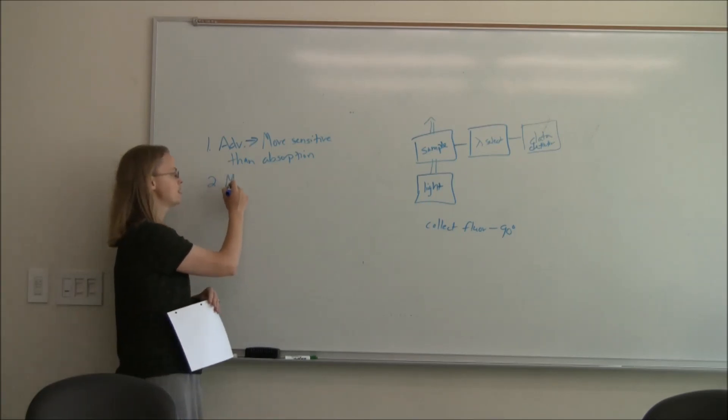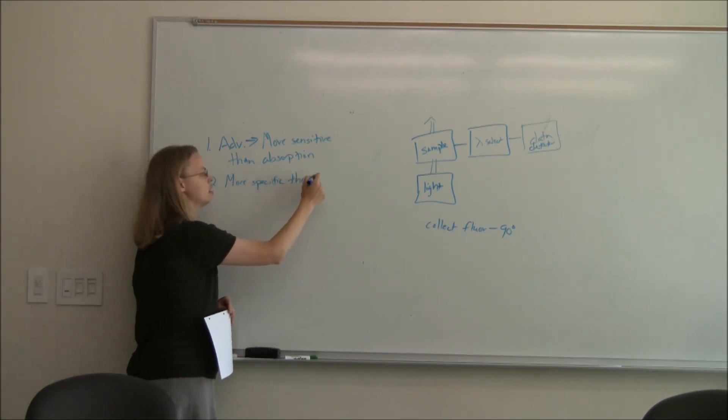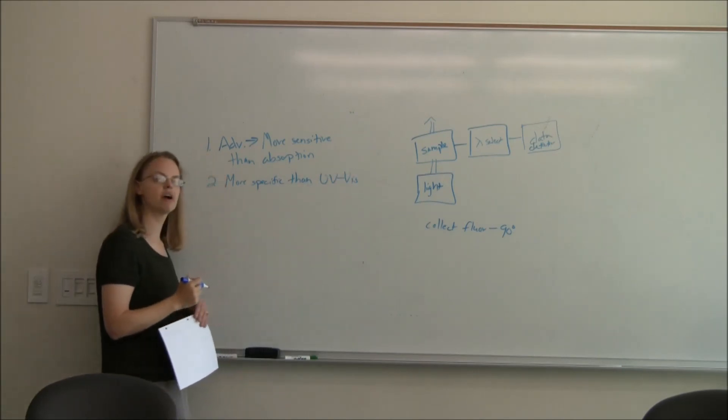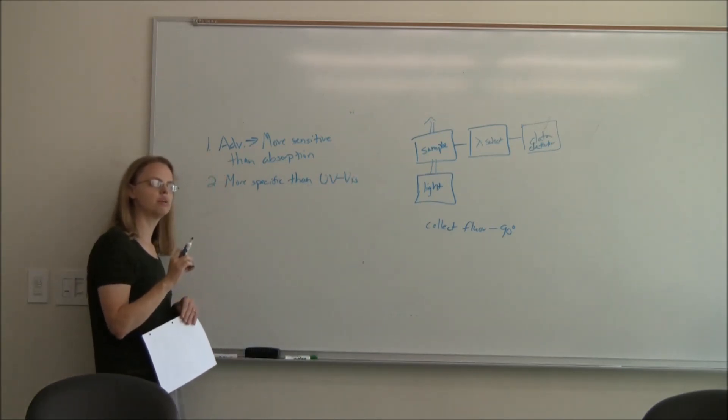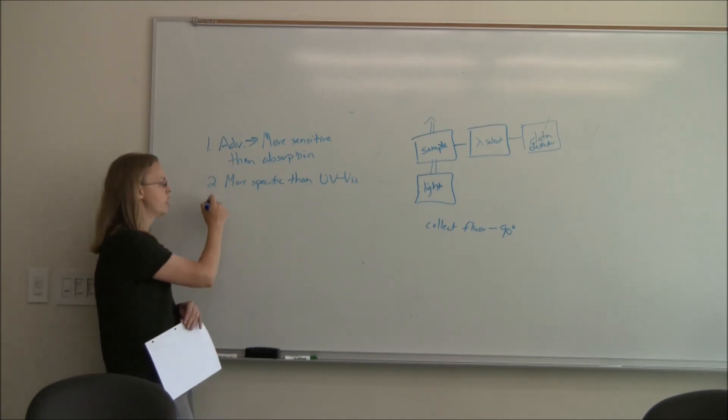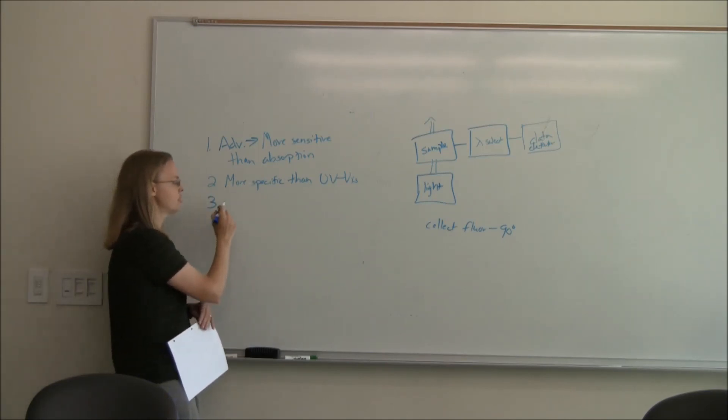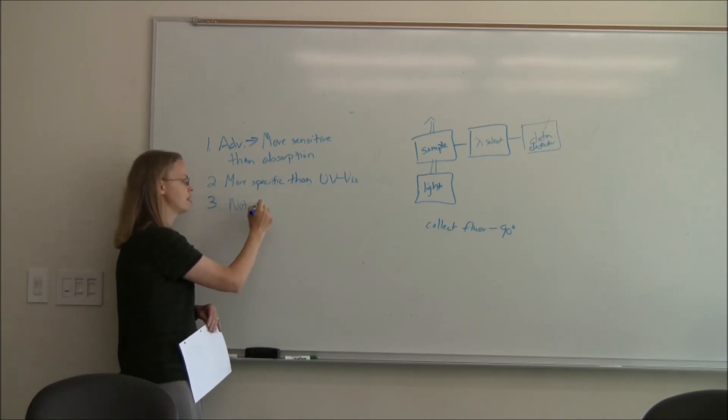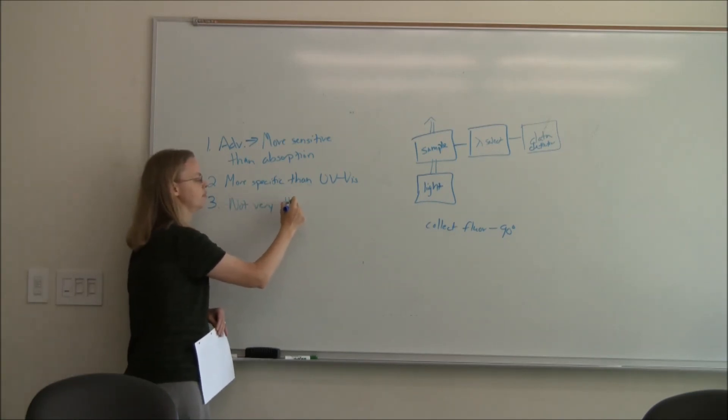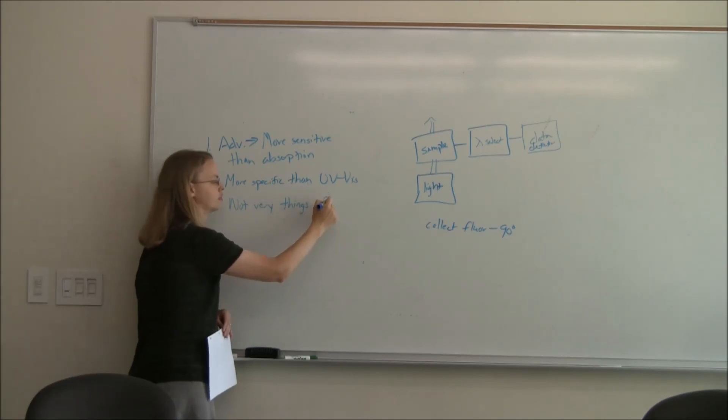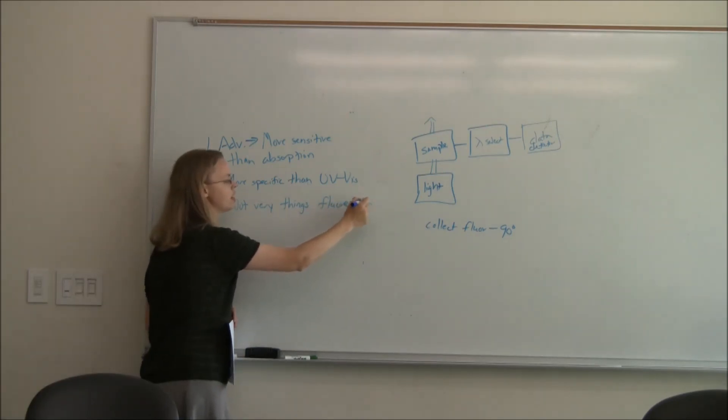It's also more specific than UV-Vis. And so that's good and bad. It's more specific. So it's easy to pick up a molecule that's fluorescent and you're only going to look at that molecule. Whereas UV-Vis, remember anything with a double bond is going to absorb. So you're going to get mixtures and it's going to be hard. But the problem, it's more specific, is that not very many things are fluorescent.